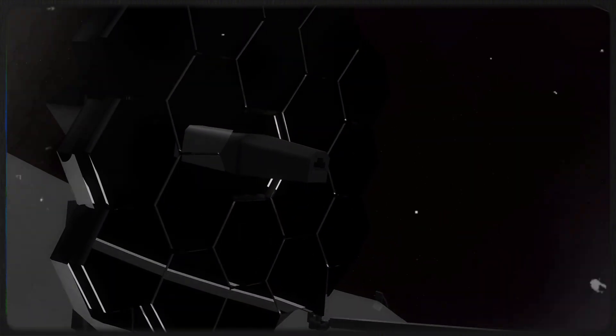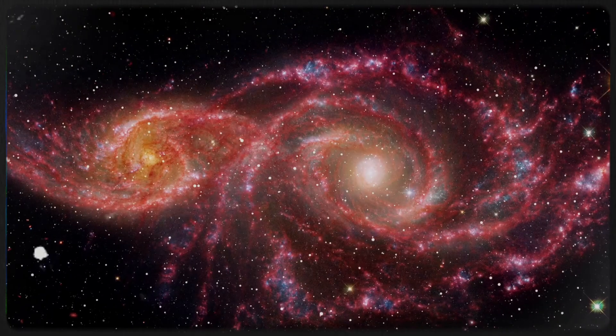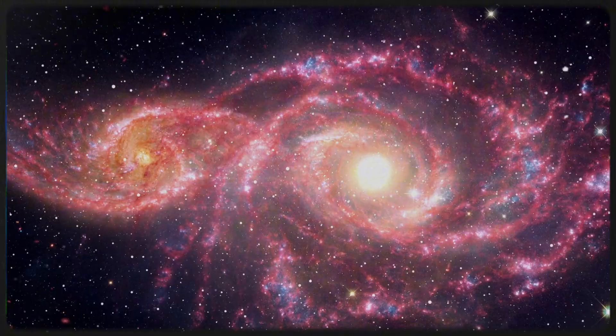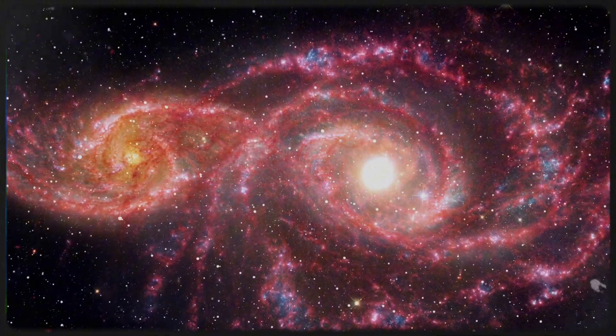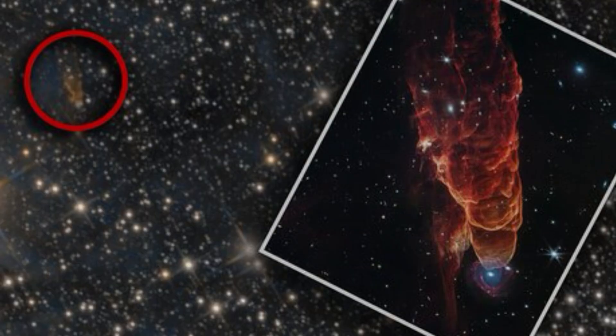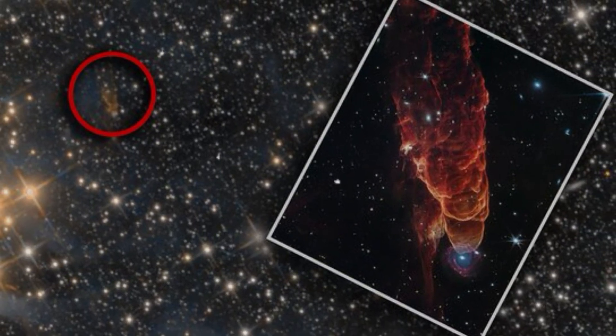Webb, with its vastly superior resolution, has now solved that mystery. That fuzzy object, it's not part of the outflow at all. It's a completely separate entity, a distant spiral galaxy perfectly lined up in our line of sight. This chance alignment has gifted us with one of the most visually captivating cosmic juxtapositions ever captured.